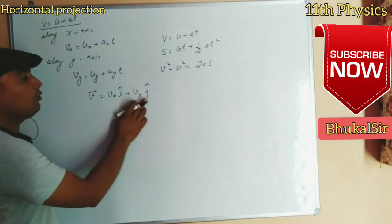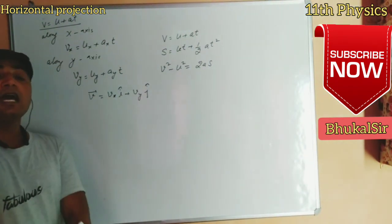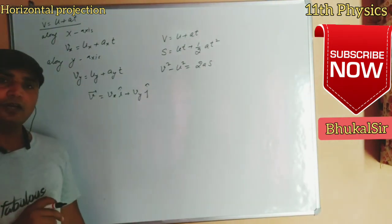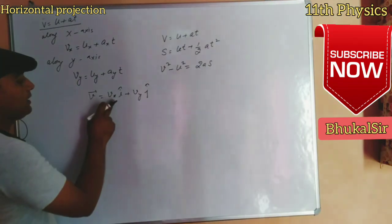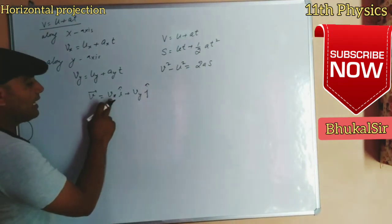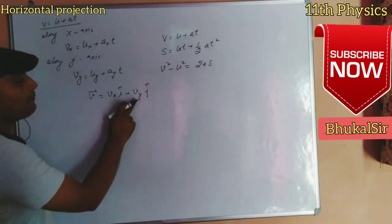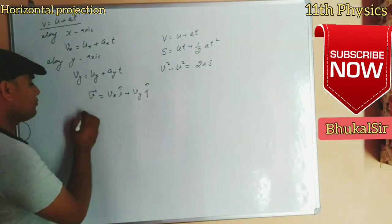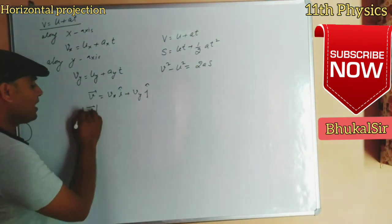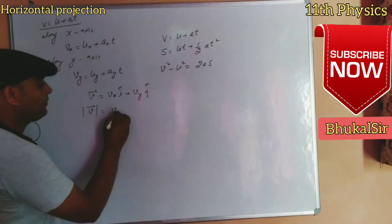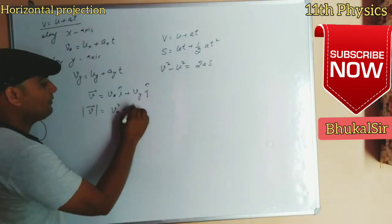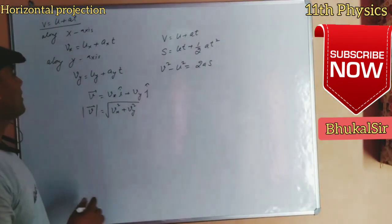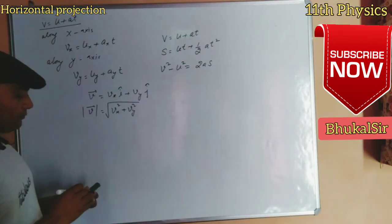Here, î is the unit vector along the x-axis and ĵ is the unit vector along the y-axis. Vx is the component of velocity along the x-axis and Vy is the component along the y-axis. The magnitude V can be written as √(Vx² + Vy²).